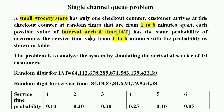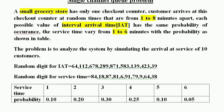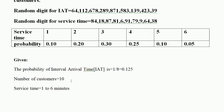The random digits for inter-arrival time are given — nine values are provided. The first customer arrives at the 0th minute, so the first inter-arrival value is 0. The random digits for service time are also given — 10 values are provided. The probability of inter-arrival time is 1 divided by 8, that is 0.125, since arrival times are 1 to 8 minutes apart. We have 10 customers and service time is 1 to 6 minutes apart.